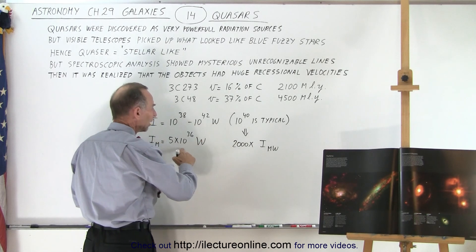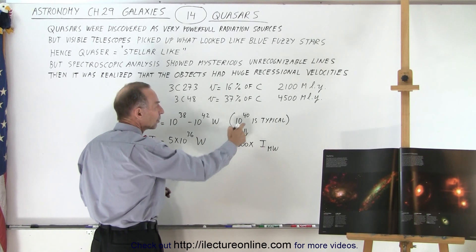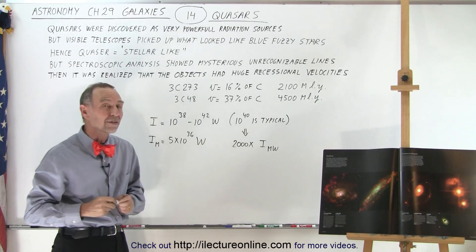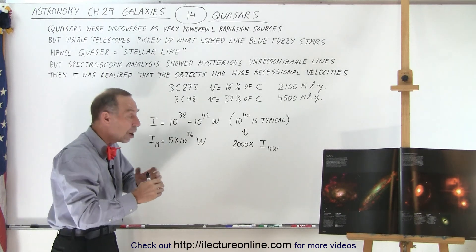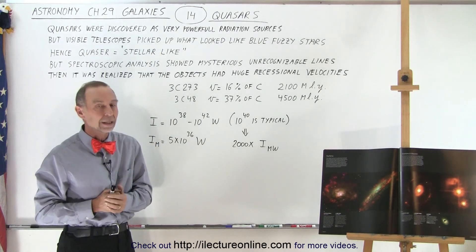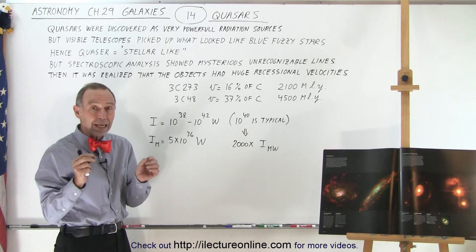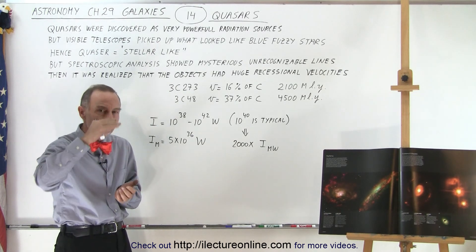That means that the intensity of a typical quasar was about 2,000 times the intensity of the entire Milky Way galaxy. Then they began to realize, because of the rate of the fluctuations, that it had to come from a very small region within that galaxy.